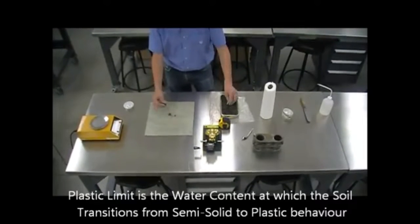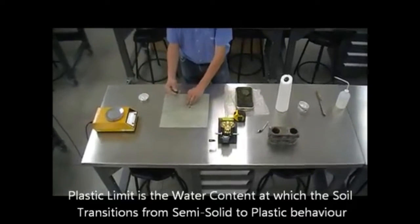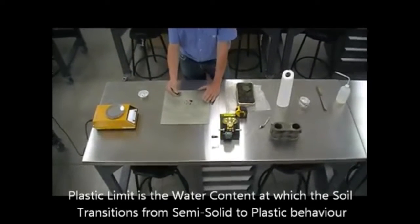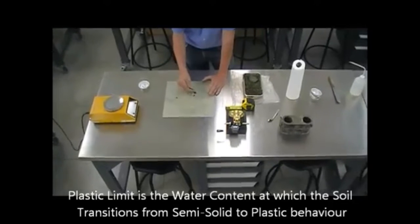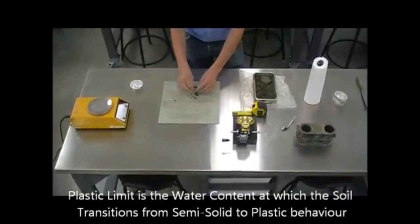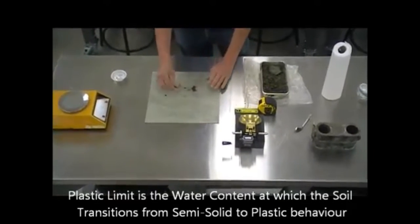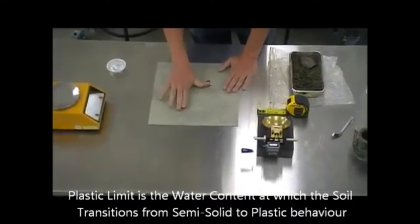So the soil will start behaving as a plastic material. And it's simply a water content. But it's a water content where the soil behaves in such a way that it can be rolled on a surface like this to form a thread.